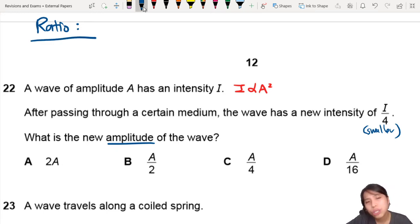What does that mean by ratio? Well, there are a few ways to do the ratio thing. I'm going to show you both methods. The first method is, your original ratio is I proportional to A squared.